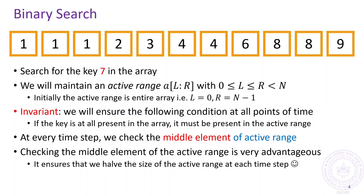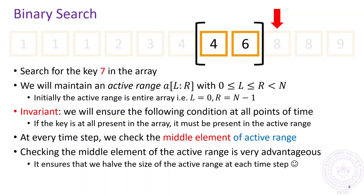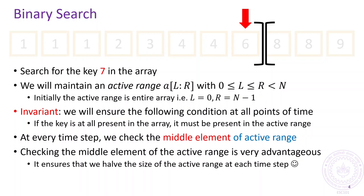Let us take another example where we are searching for the key 7. Note that 7 is not present in the array. We start with the entire array as the active range, check for the middle element and find that it is smaller than the key. This means that none of the elements to the left could have been equal to the key either, which allows us to shrink the active range. Next, we check the middle element of this new active range and find that it is larger than the key, meaning none of the elements to the right could have been equal to the key. We are now down to an active range with only two elements. We define the second element to be the middle one and check for it. We find that it is smaller than the key, at which point the active range has become empty. This is a signal that the key 7 was not present in the array at all.